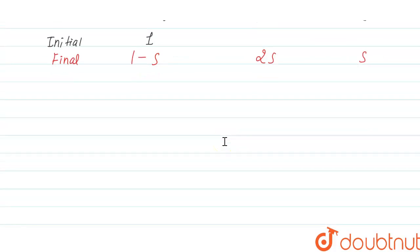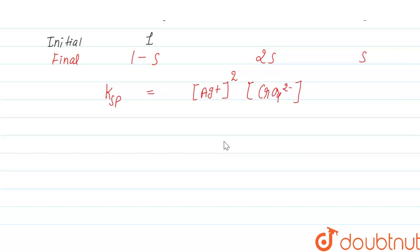We can now write the Ksp expression for Ag₂CrO₄: Ksp = [Ag⁺]² × [CrO₄²⁻], where the exponents are the stoichiometric coefficients. The stoichiometric coefficient of Ag⁺ is 2 and of CrO₄²⁻ is 1. The activity of solid Ag₂CrO₄ is 1. So Ksp = (2s)² × (s).